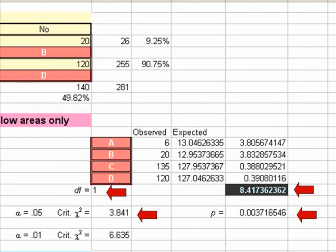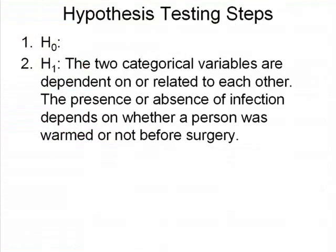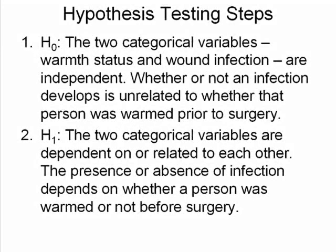Let's do our seven hypothesis testing steps. I always start with step two. Step two is the alternative hypothesis — what we're trying to show. We're trying to show that the two categorical variables are dependent or related to each other. That is, the presence or absence of infection depends on whether a person was warmed or not before surgery.